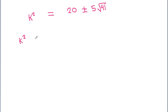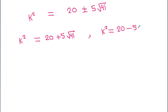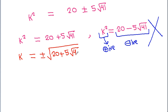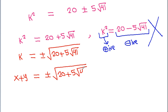So we get k squared equals 20 plus 5 times square root of 41. Since k squared must be positive and the other case (20 minus 5√41) is negative, it is not possible. Therefore k squared equals 20 plus 5 times square root of 41, and k equals x plus y equals plus or minus square root of 20 plus 5 times square root of 41. Thank you very much.